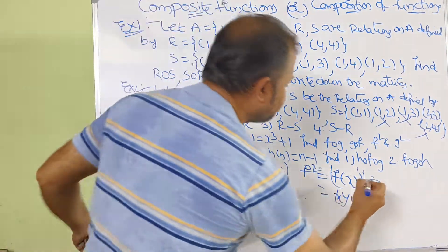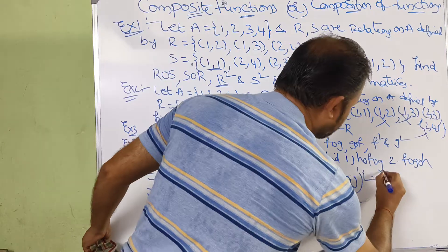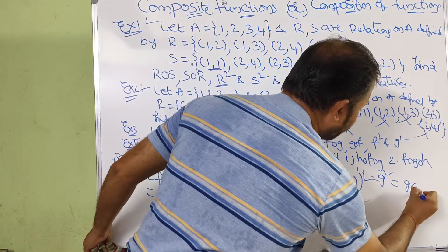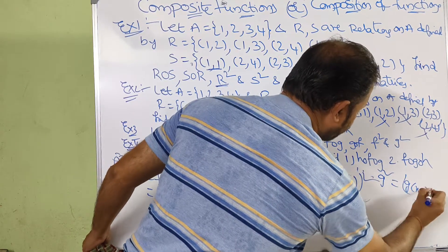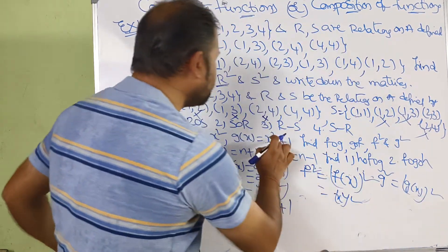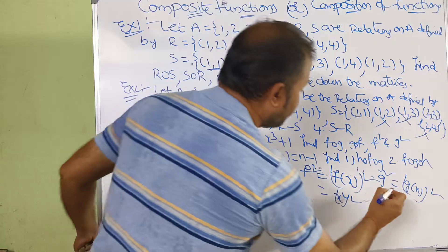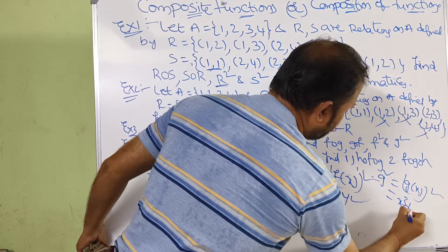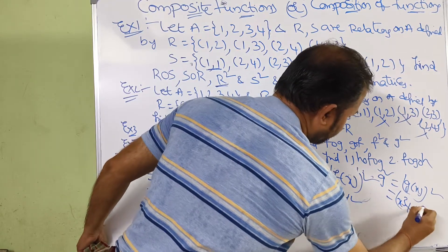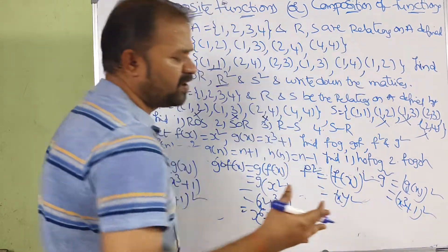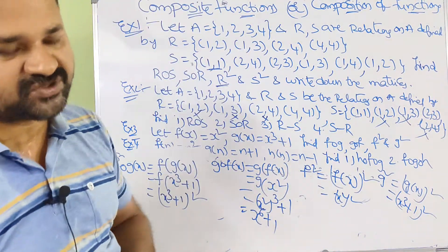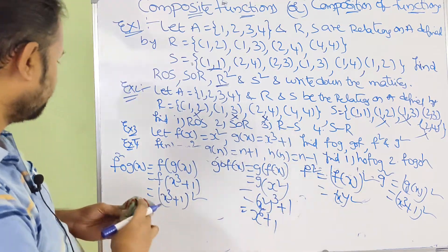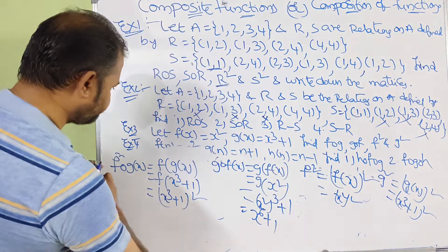Likewise compute g². g² means (g(x))². What is g(x)? x³ + 1. So g² = (x³+1)². You can expand this using the formula for (a+b)².